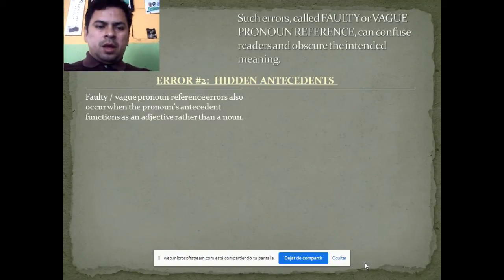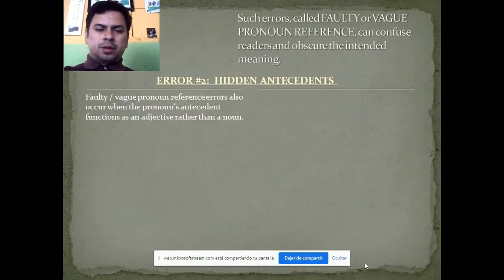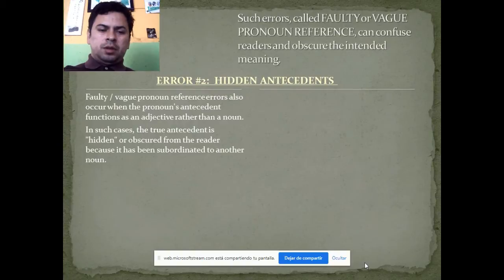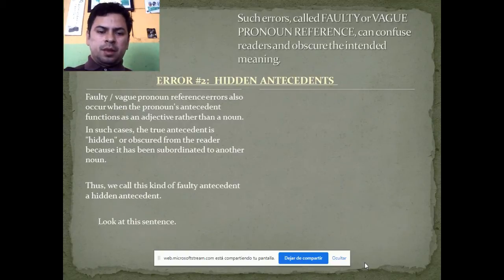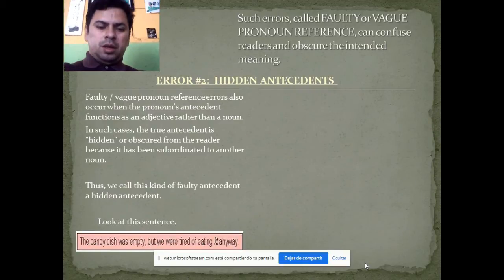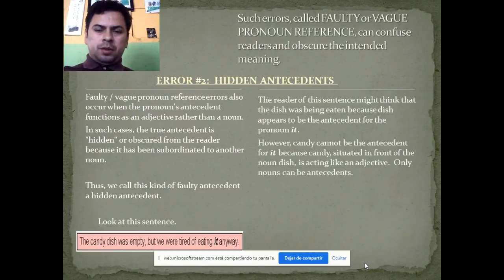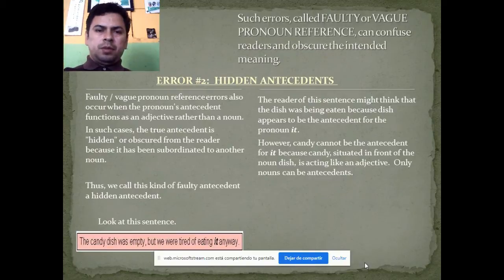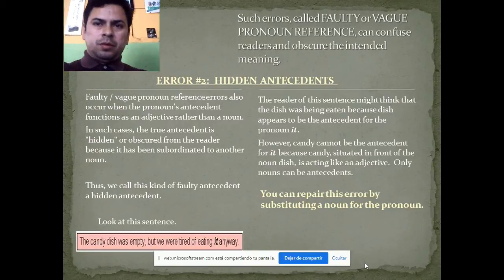Error two: Hidden antecedent. Faulty pronoun reference occurs when the pronoun's antecedent functions as an adjective rather than a noun. In such cases, the true antecedent is hidden from the reader because it has been subordinated to another noun. We call this a hidden antecedent. Look at this sentence: 'The candy dish was empty, but we'll try to eat it anyway.' The reader might think 'candy' is the antecedent for the pronoun 'it,' but candy is acting as an adjective modifying 'dish.' Only nouns can be antecedents. You can repair this error by substituting the noun for the pronoun.